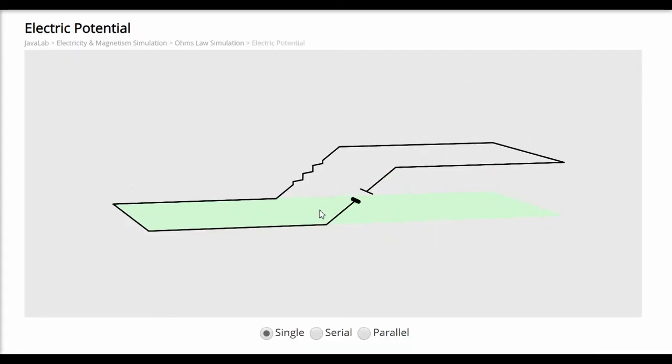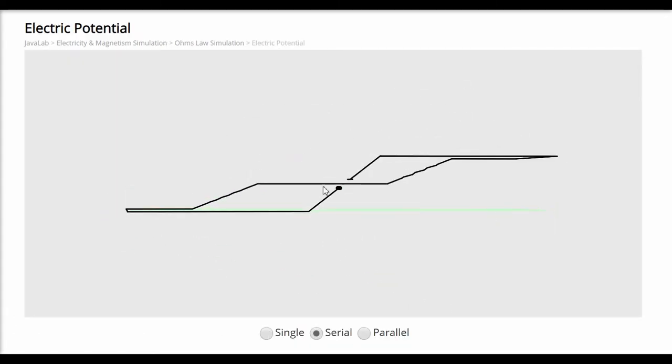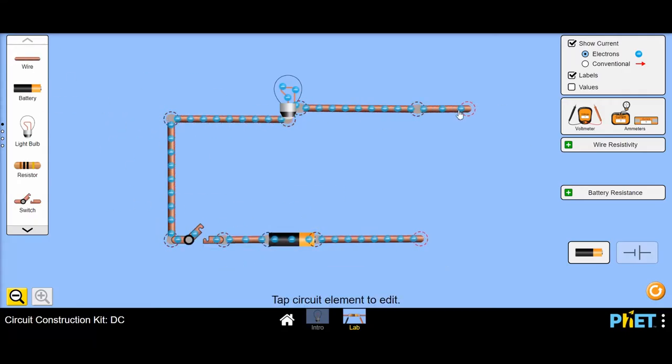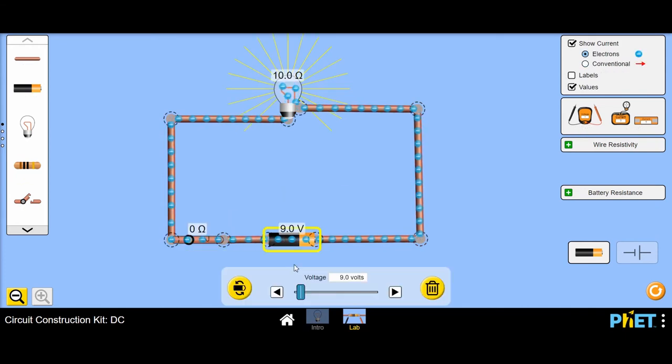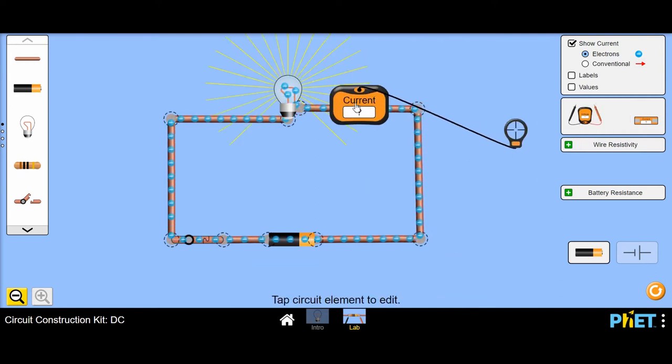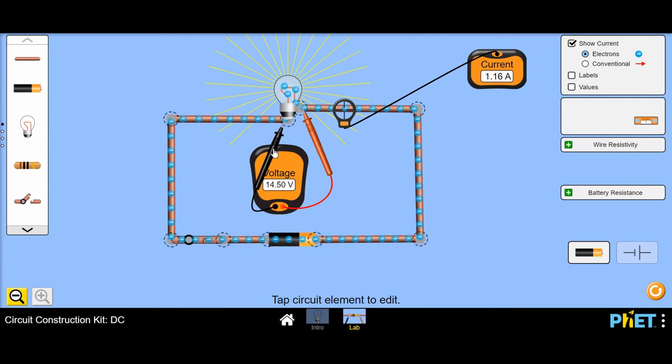Electric potential can be understood with this simulation. You can build circuits the way you want and understand the difference between conventional and regular current flow. You can measure current and potential difference between components and reinforce your understanding of Ohm's law.